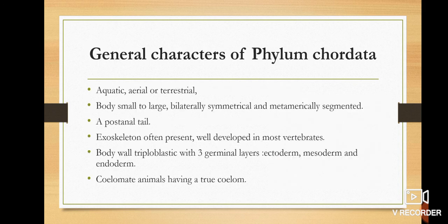Now we will read one by one the general characters of Phylum Chordata. These animals are aquatic, aerial, and terrestrial. The body size is small to large. The body symmetry is bilateral and the body is metameric segmented. The post-anal tail is present; all animals in Phylum Chordata can have a post-anal tail in the adult stage.